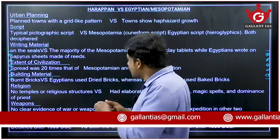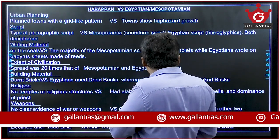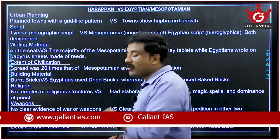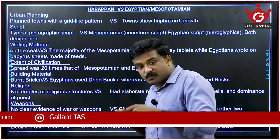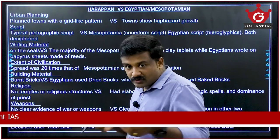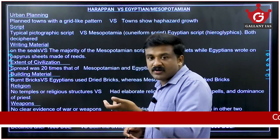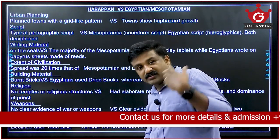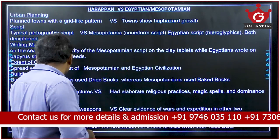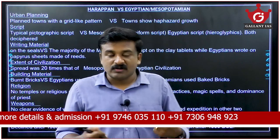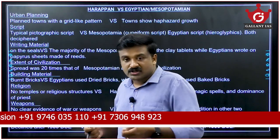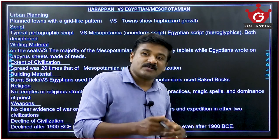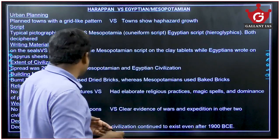Most Indus inscriptions are found on seals, while Mesopotamian script was written on clay tablets and Egyptians wrote on papyrus sheets made of reeds. In terms of extent, according to recent excavations, the Indus civilization is bigger and wider than Mesopotamia and Egypt. For building material, burned bricks were mostly used in the Indus civilization, whereas they used dried and baked bricks elsewhere. No clear temple structures have been identified in the Indus civilization, unlike Egyptian and Mesopotamian civilizations.